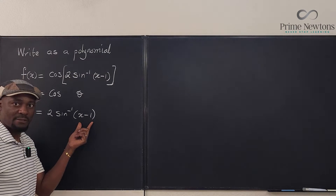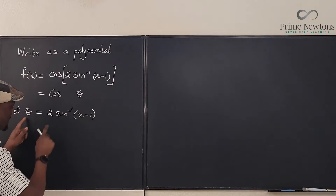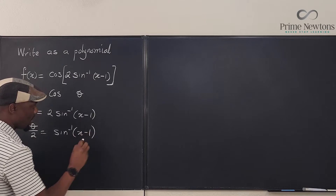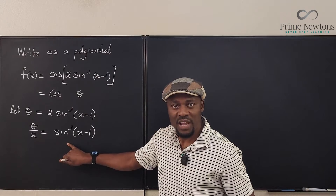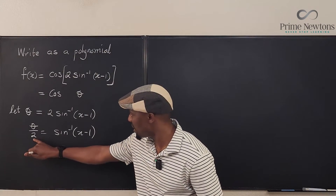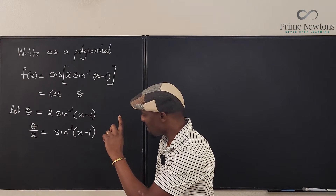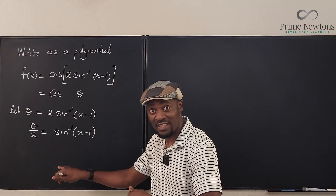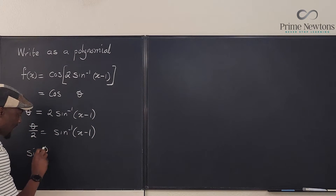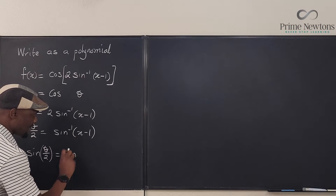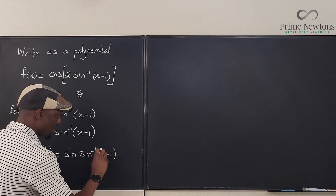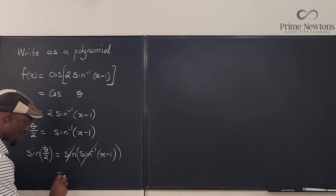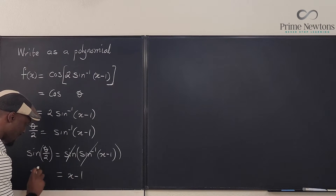I need to get my expression in terms of X. I can divide both sides by 2, so that theta over 2 is equal to inverse sine of X minus 1. I still can't deal with inverse sine because I have to get rid of it — I just need a connection between this and this. I can undo this inverse sine by taking the sine of both sides. So if I take the sine of theta over 2, it equals the sine of the inverse sine of X minus 1. These two are inverse functions, so they cancel, leaving X minus 1. And what I have here is sine of theta over 2.